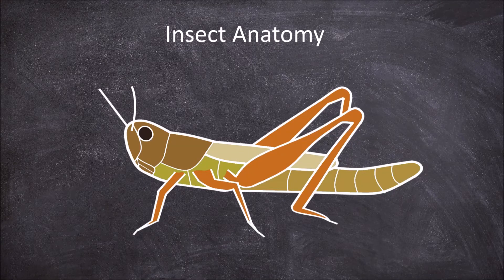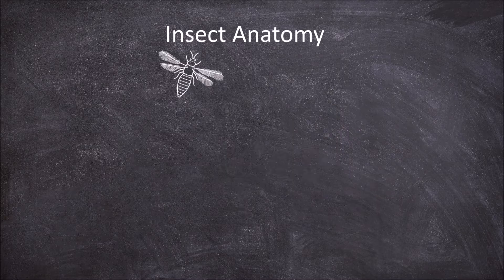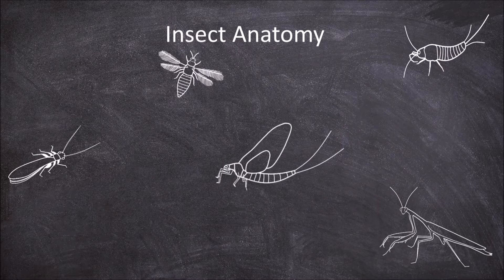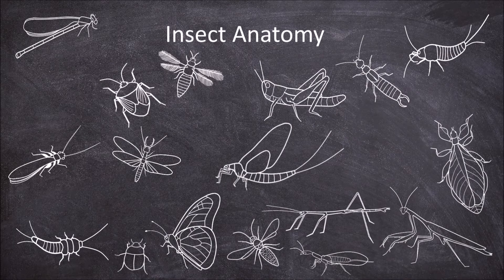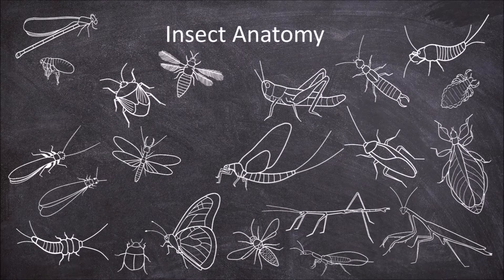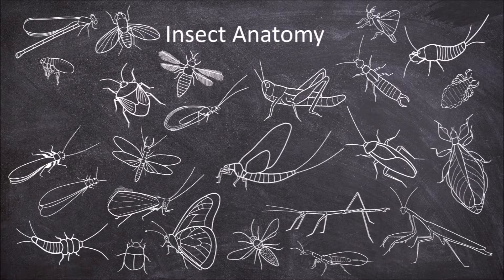In this video we are going to discuss the basic anatomy of an insect. There are over 90,000 species of insects described today, with a great array of shapes, colours, appearances and adaptations. Despite these differences, insects all share the same basic anatomical template.